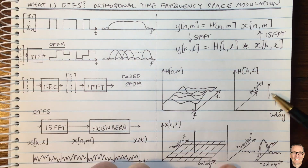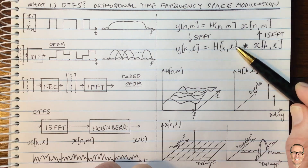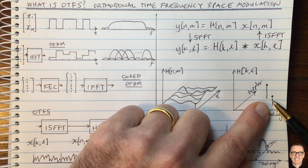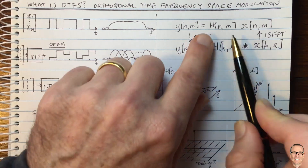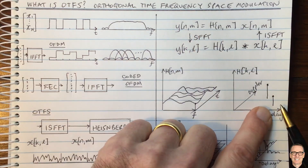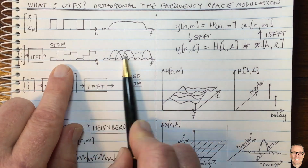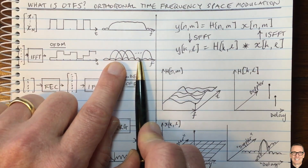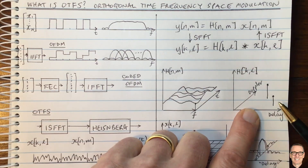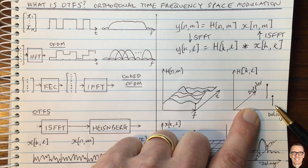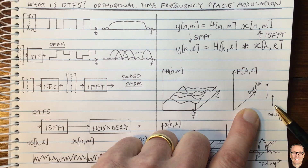To summarize the advantages: in delay-Doppler we have a matrix with far fewer elements to estimate compared to the full time-frequency channel, making channel estimation much more feasible. The signal does not come out perfectly orthogonal after passing through the channel — just as with OFDM under time variations — but since the channel acts as a convolution in the delay-Doppler domain, deconvolution and equalization are conceivably easier to perform.